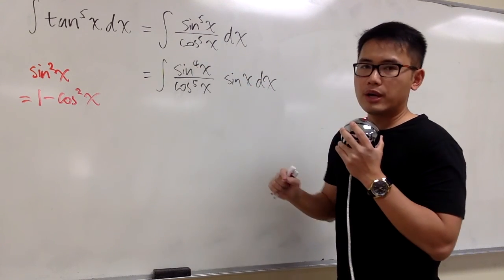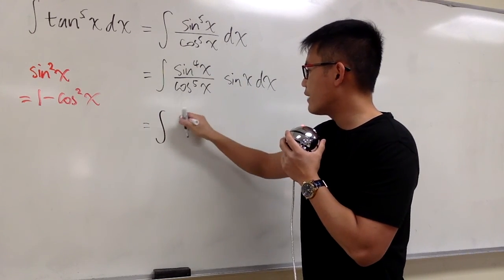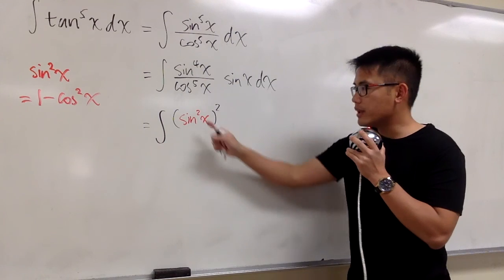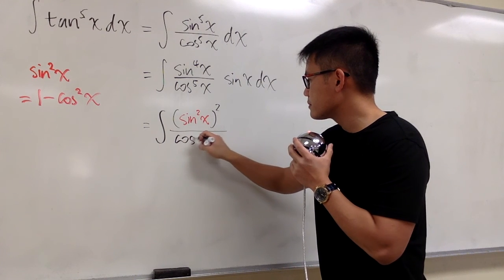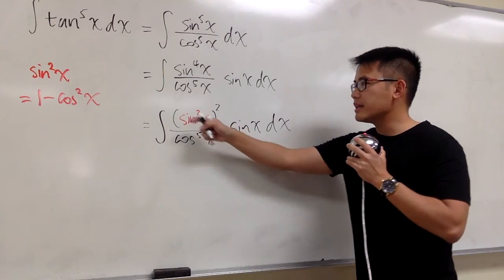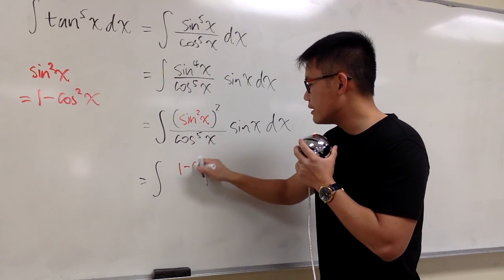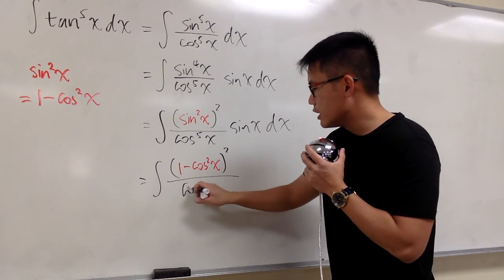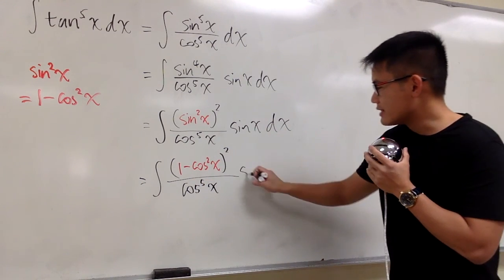On the top we have sine to the fourth power of x. This is sine to the second power, squared — so I'm going to write it as sine squared x, and then square that to get the fourth power. On the bottom we still have cosine to the fifth power of x, and we have the sine x on the side. Plugging in the identity, we get the integral of (1 minus cosine squared x) to the second power, over cosine to the fifth power of x, times sine x.